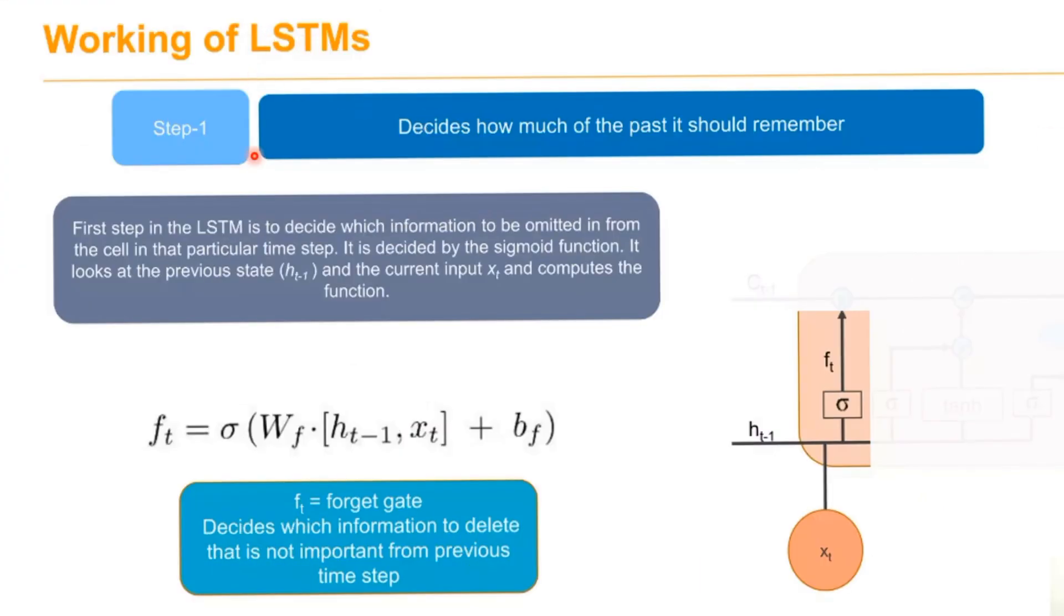Now let's see how LSTM works. Step one is to decide how much amount of past we should remember. This is the incoming value of past and this is present. We have to define how much past to remember.